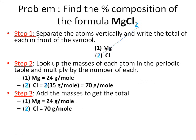After you've done that, Step 3. Add the masses to get the total. 24 grams per mole, plus 70 grams per mole, equals 94 grams per mole.